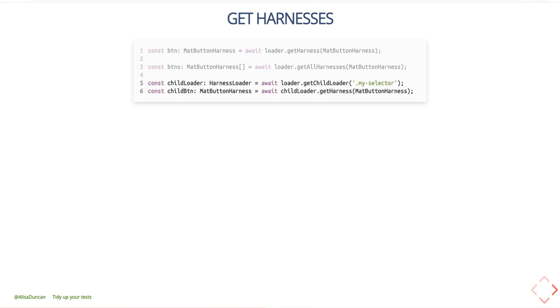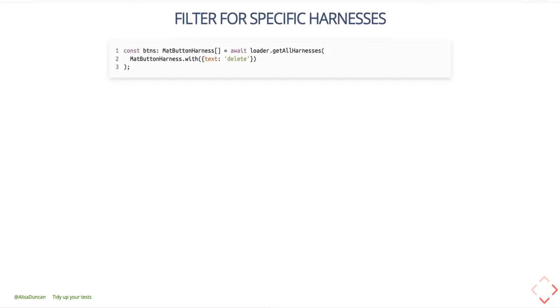You can also focus your search within a subsection of the component by creating a child loader, passing in a selector such as nav, footer, or a class. Once you create this child loader, you can load harnesses just like we discussed. You can also filter for specific harnesses if the component harness supports it — and it will be different per component harness. For example, the MatButton harness supports searching by text, so you can load all harnesses for MatButton that contain the text 'delete'.